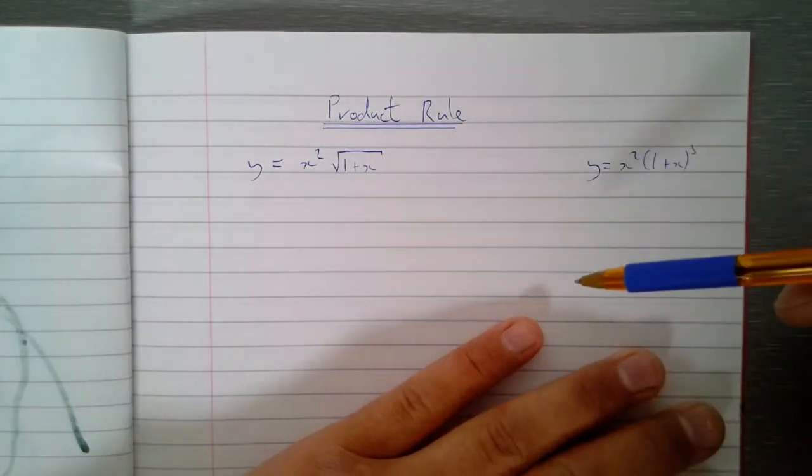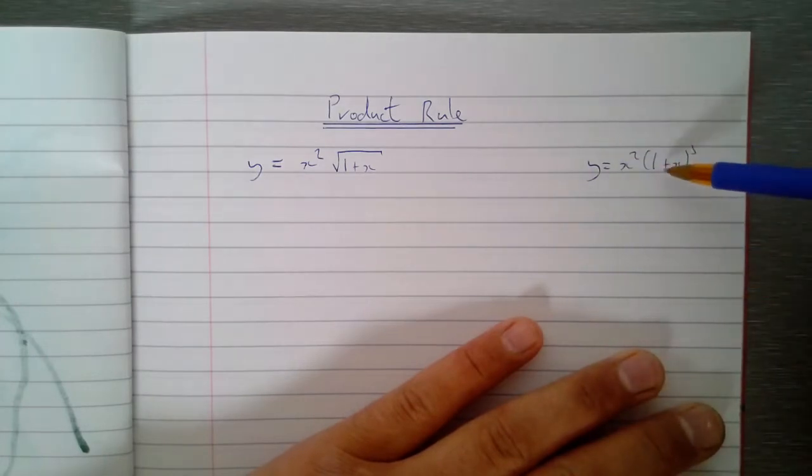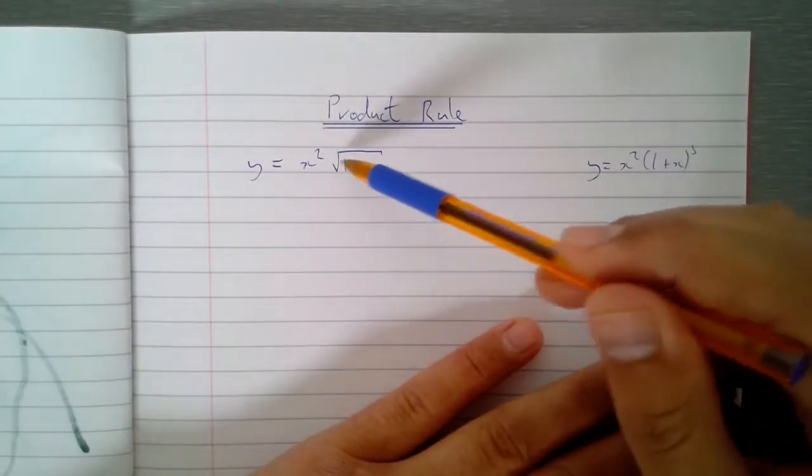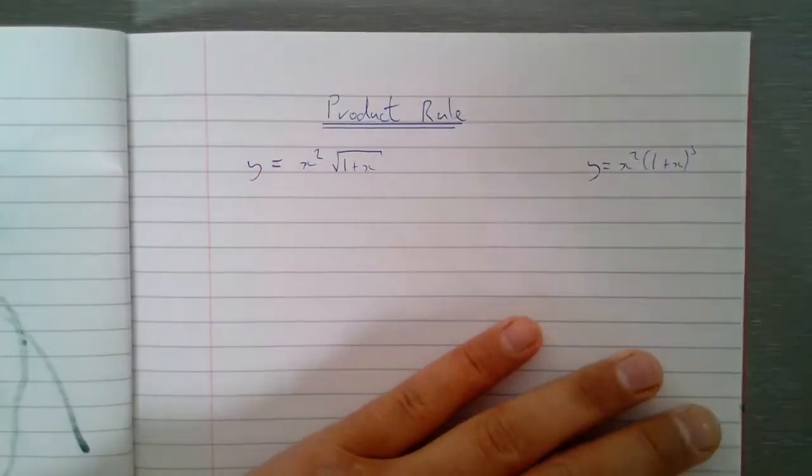The product rule which we're going to use today is going to make that process a lot more efficient, but also it's going to let us deal with situations like this where it's difficult to multiply it out at all.